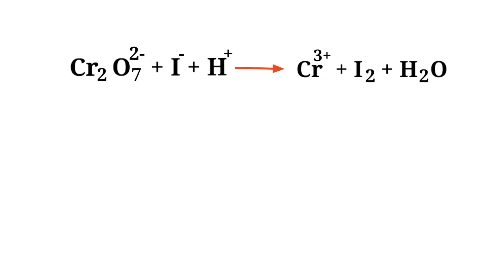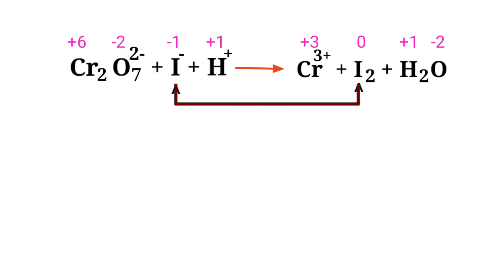First, figure out the reducing and oxidizing agents by the rules of assigning oxidation numbers. In the Ion Electron Method, one reaction is divided into two reactions and then they are balanced and added together. In this equation, iodine has a charge of minus 1 and it is changing into 0, so iodine is being oxidized.